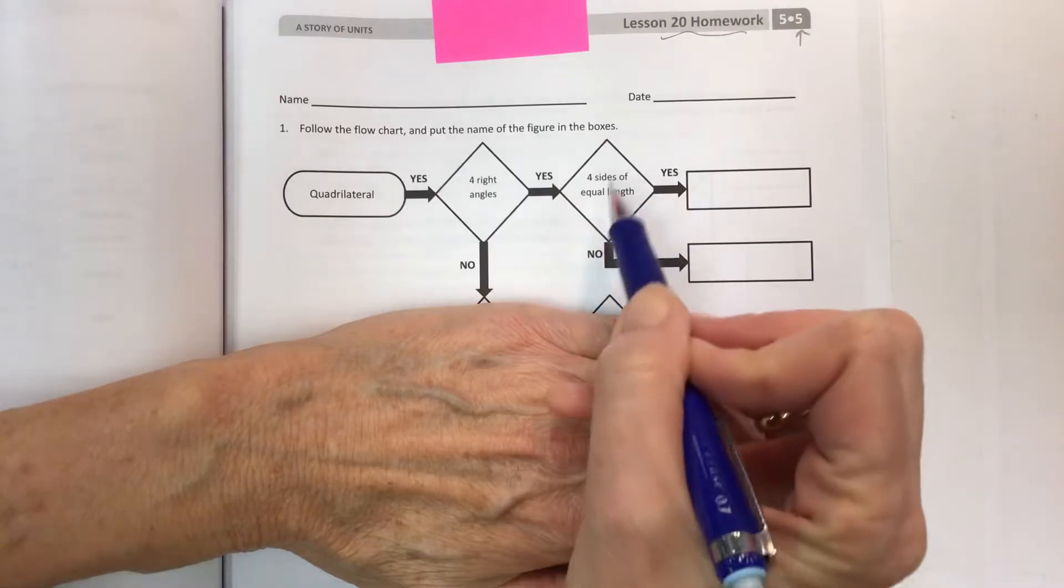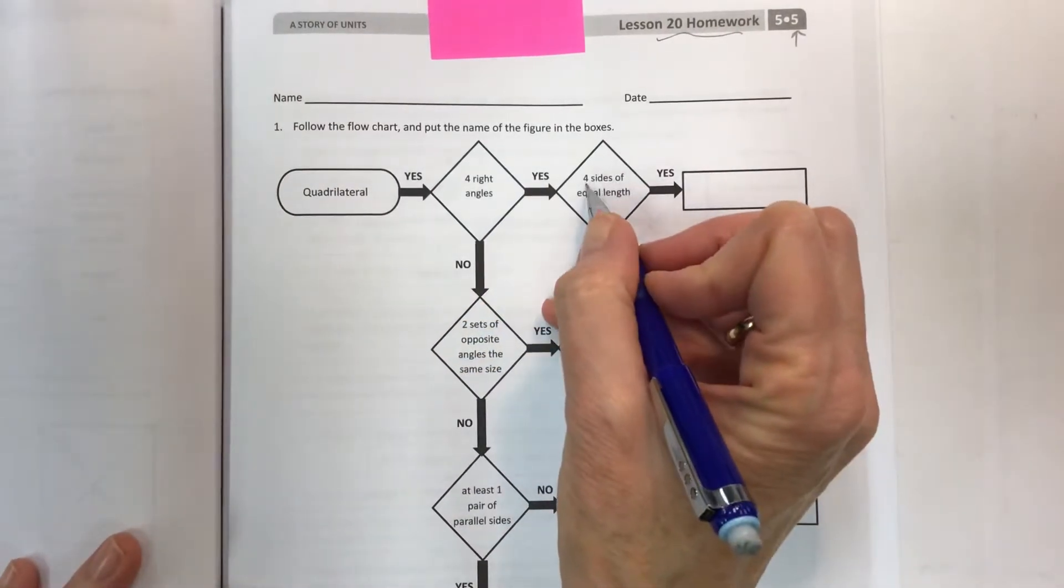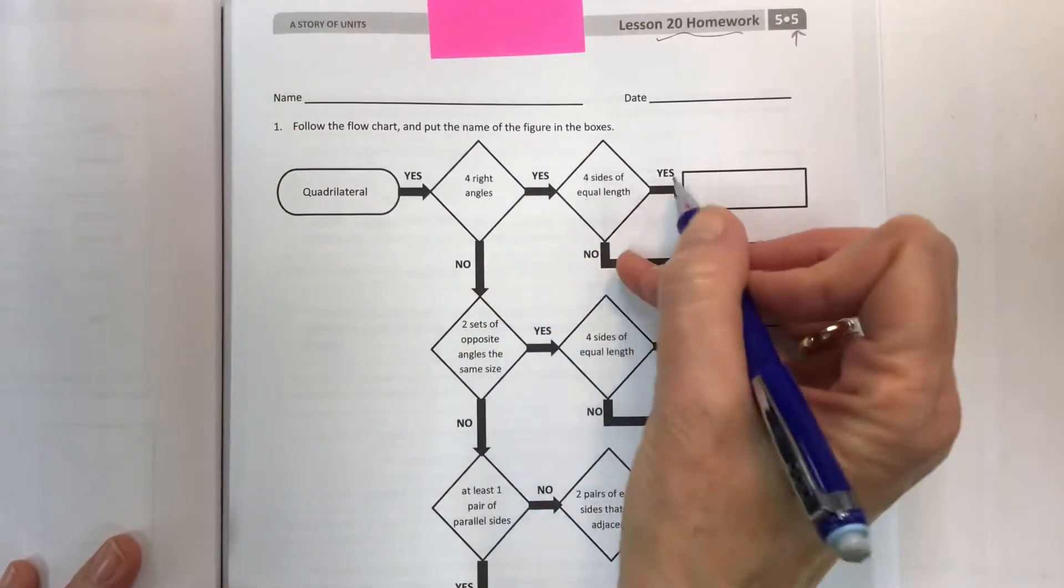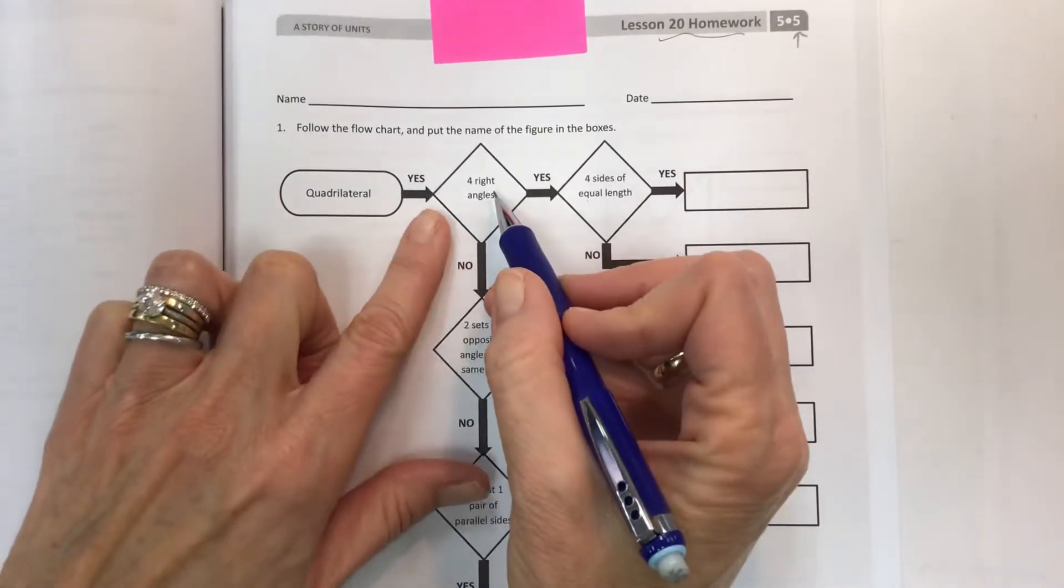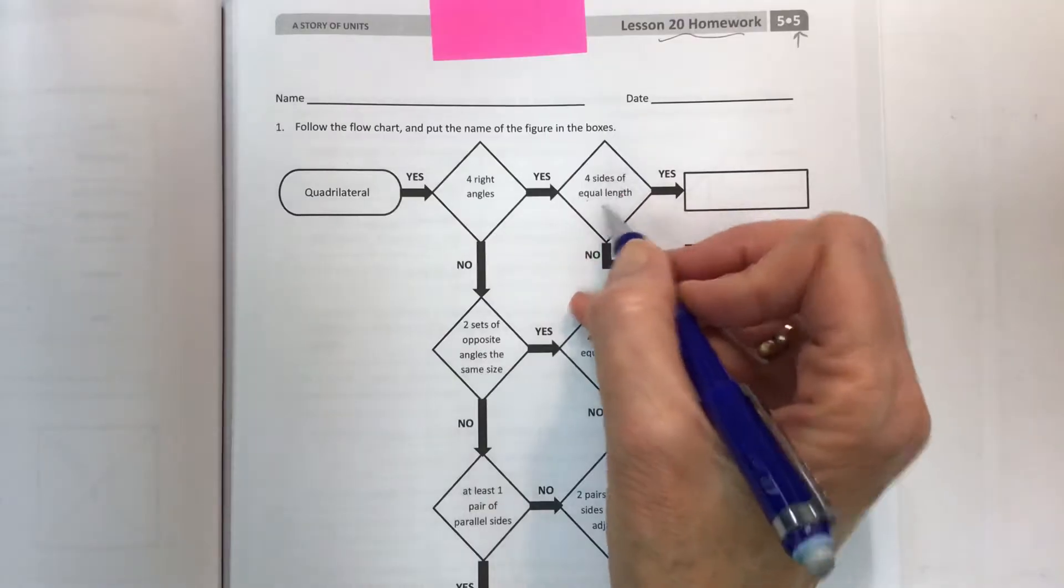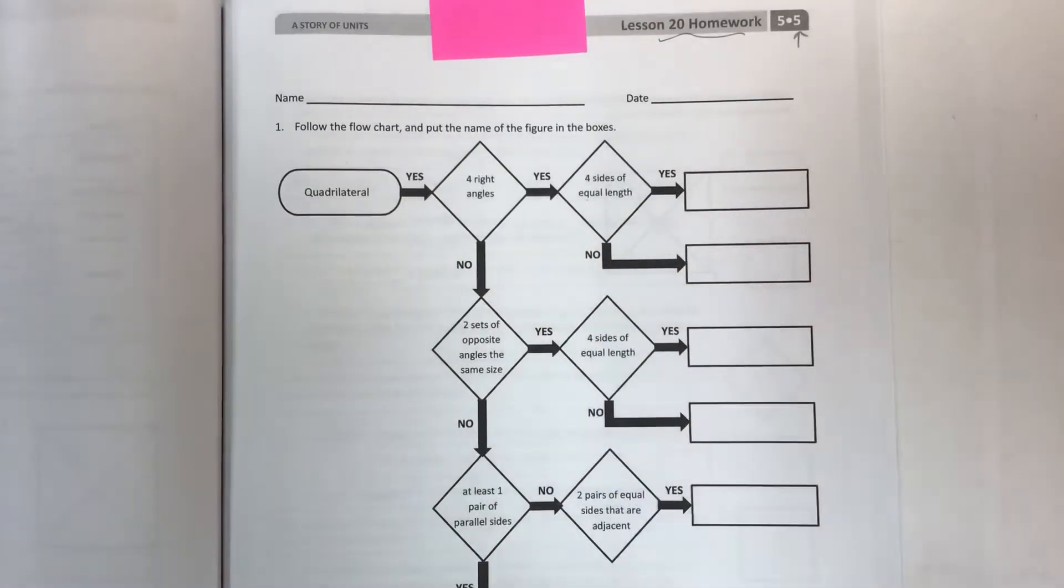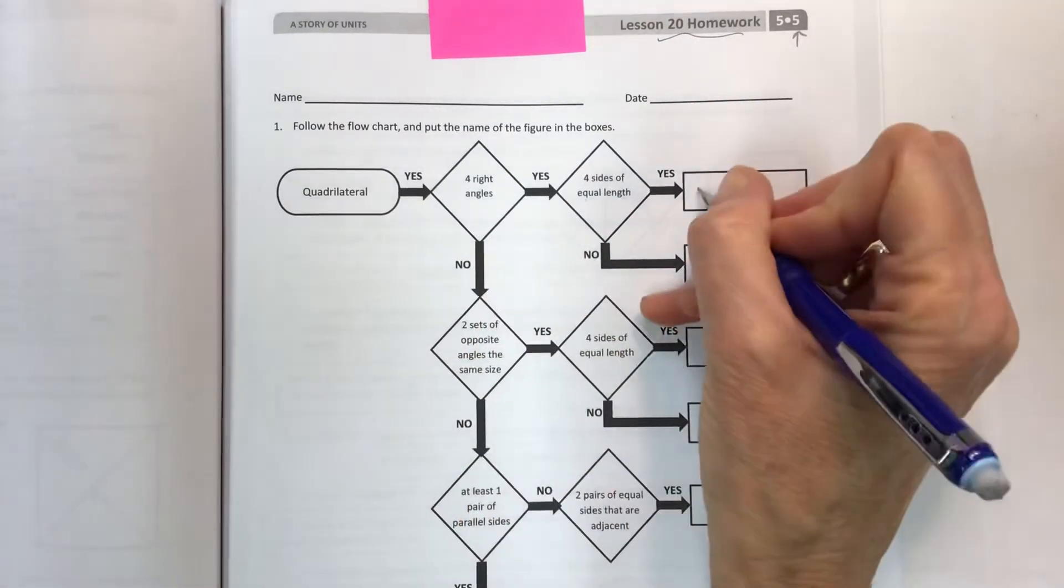So what is that last attribute that you have to consider? Are four sides of equal length, yes or no? If it's a quadrilateral and it has four right angles and four sides of equal length, you have one choice and it is a square.